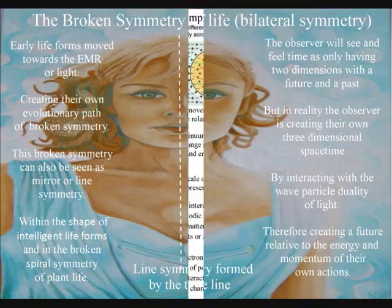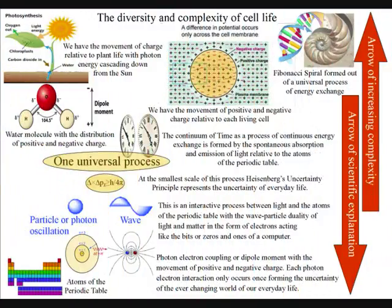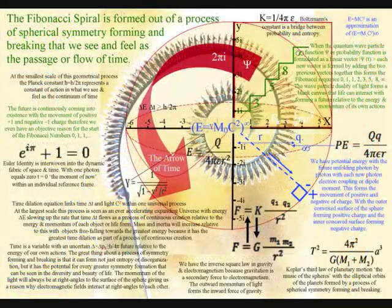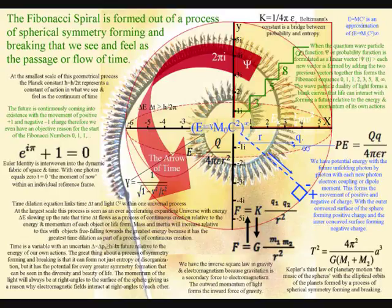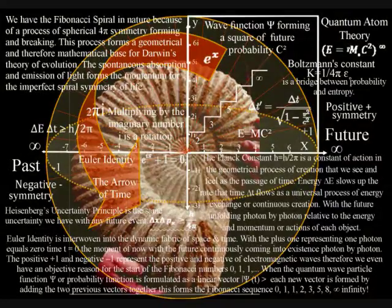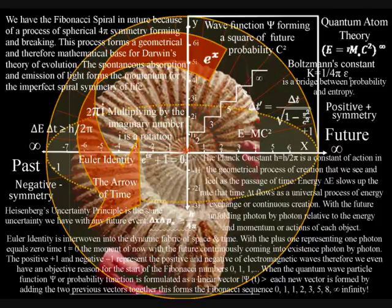When the spherical symmetry is broken, it forms the imperfect spiral symmetry of life that is visible in nature. This is because if the quantum wave particle function or probability function is reformulated as a linear vector, then all the information I can find says that each new vector is formed by adding the two previous vectors together. This forms the Fibonacci sequence.